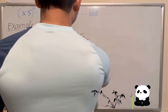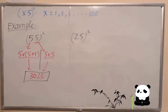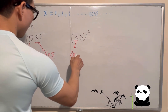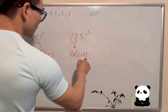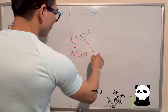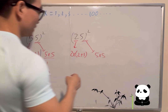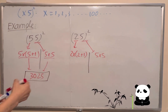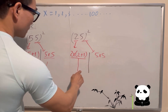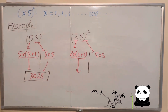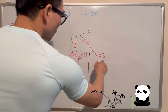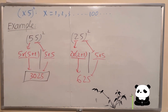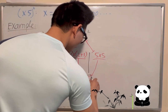Another one: 25 squared. How do you calculate that? The same — you do 2 times 2 plus 1, and here you calculate 5 times 5. So 2 plus 1 is 3, and 3 times 2 is 6. Then 5 times 5 is 25. The answer of 25 squared equals 625.